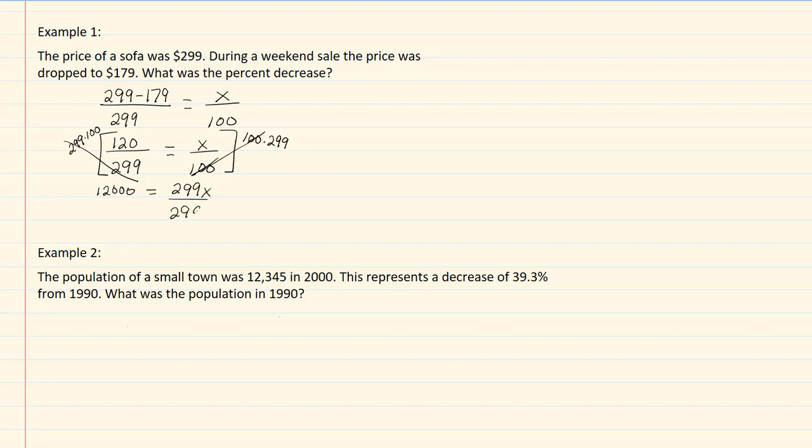Divide by 299, and I get that x equals 40.1337. Depending on where they ask you to round the decimal, depends on how far out you need to go. With this one, let's say we're going to go to two decimal places, so this would be 40.13 percent.